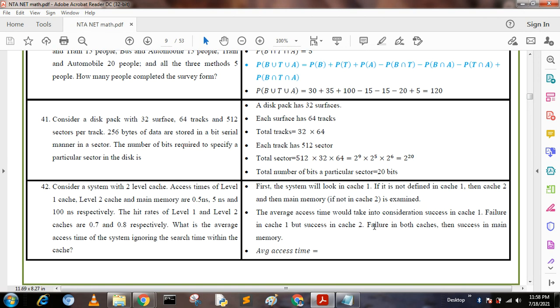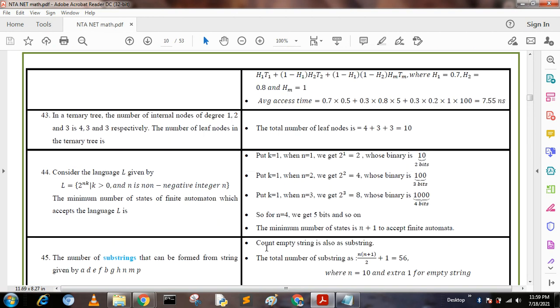The average access time takes into consideration: success in cache one, failure in cache one but success in cache two, or failure in both caches then success in main memory. Average access time = h1×t1 + (1-h1)×h2×t2 + (1-h1)×(1-h2)×tm